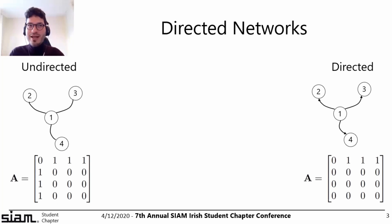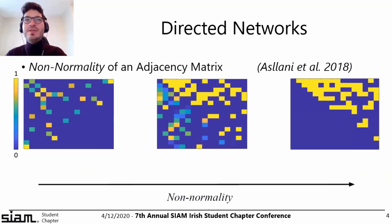The difference between undirected and directed is that my undirected adjacency matrix is symmetric and my directed one doesn't need to be. Then in 2018, Aslani et al. introduced the concept of non-normality, which takes this binary property and brings it to something smooth.